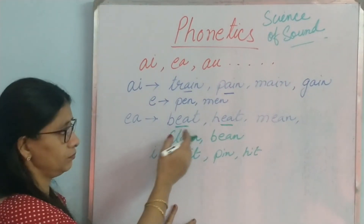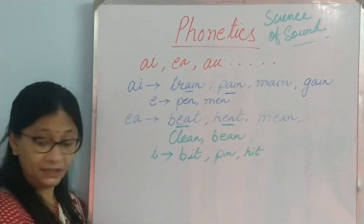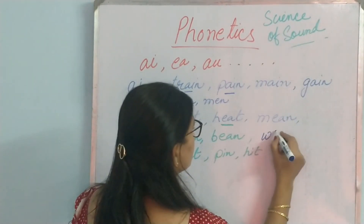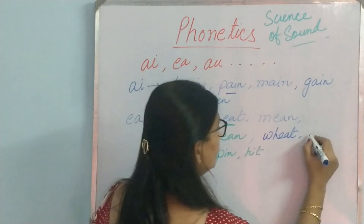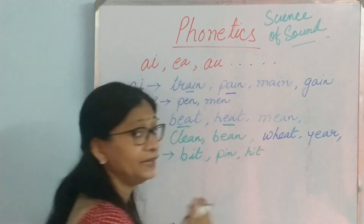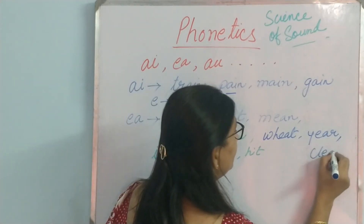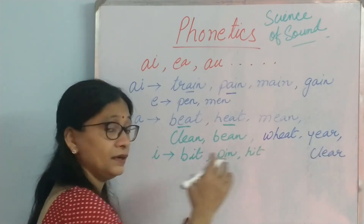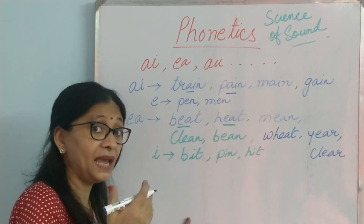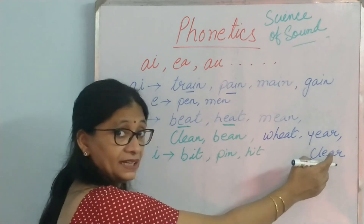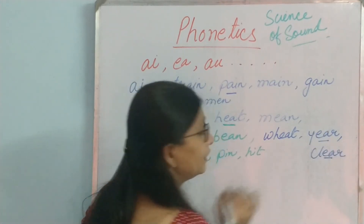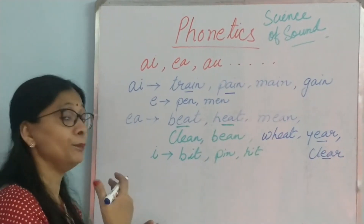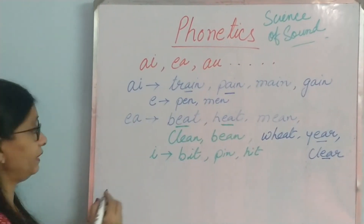Some other words with EA: beat, heat, clean, bean, wheat. Then we have ear and clear — but here there is an exception. With 'ear' and 'clear' we are not getting a plain EE sound but more of an EAR sound — clear, ear. These are a little different. But generally with EA we get the long EE sound, like beat.